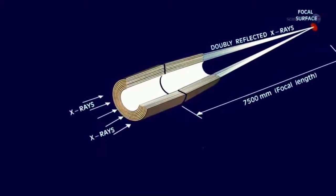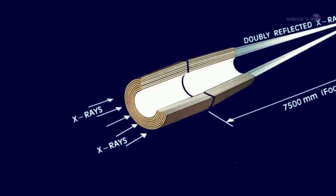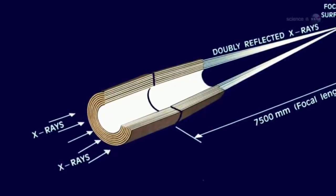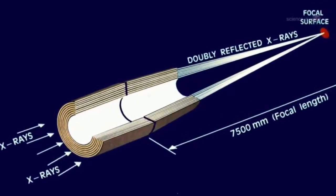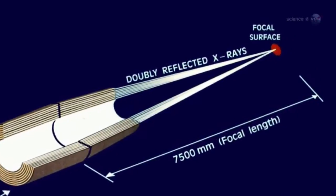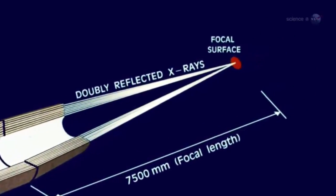X-ray telescopes are an entirely different kind of telescope consisting of many concentric shells. They look a bit like the layers of a cylindrical onion. Incoming X-rays pass between these layers, which guide the X-rays to the focus by reflecting them off the surfaces of the shells.